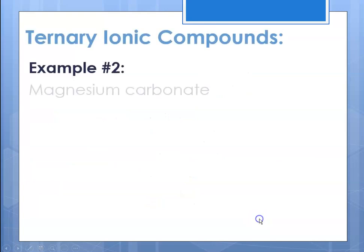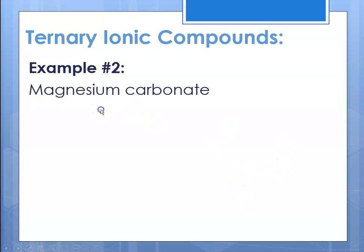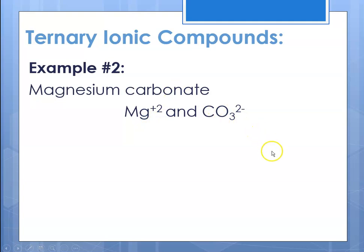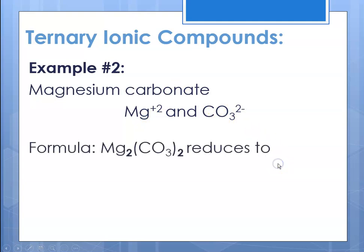Example two: magnesium carbonate. Magnesium has a charge of plus two because it is a group two metal, and the carbonate ion has a charge of negative two. Using the crisscross method, the formula would initially be Mg₂(CO₃)₂.